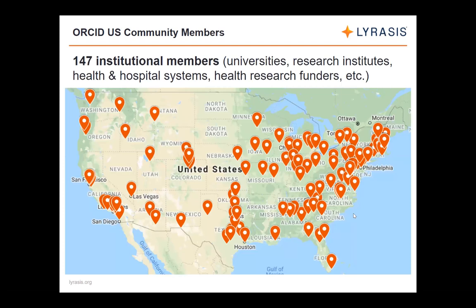Currently we have 147 organizational members in the ORCID US community, and that number is steadily growing. This map gives you an idea of where our various members are located. We have mostly universities, but also some research institutes, health and hospital systems, health research funders, and other research-related groups — for example, ESIP, the Earth Science Information Partners, is also one of our ORCID US community members.